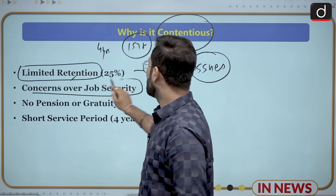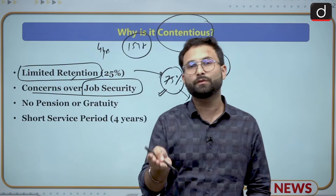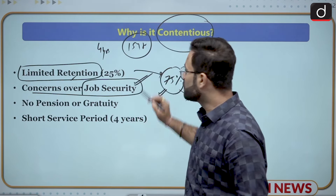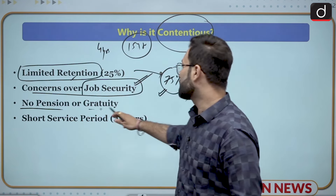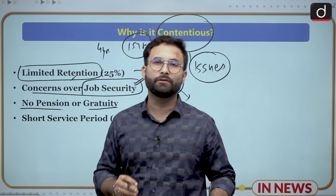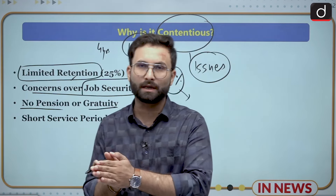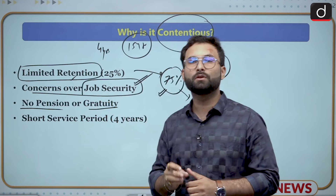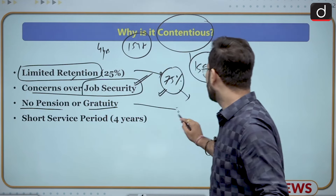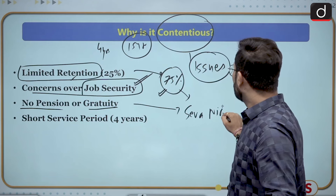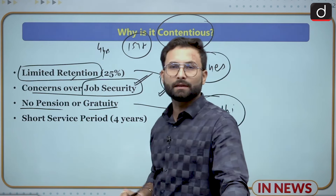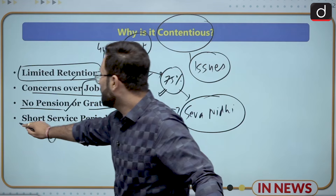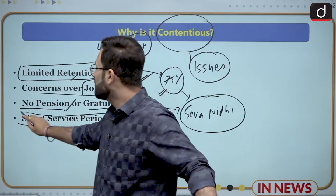The second concern is job security — after 4 years, there is no guarantee of employment. Third, there is no pension and no gratuity for Agniveers. Regular military personnel on permanent or short service commissions get pensions, but Agniveers only receive the one-time Seva Nidhi payment. The fourth issue is the short service period of 4 years itself, with only 25% retained afterward.